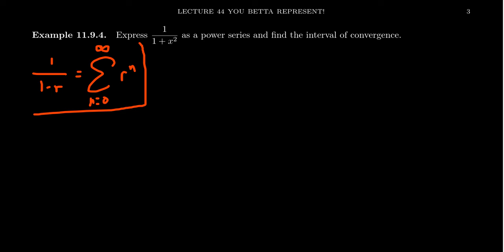Comparing this original rational function with our target rational function, we see that we want to take this positive x squared and set that equal to negative r. That is, x squared equals negative r because we have a positive here and a minus there. In other words, r equals negative x squared, and we make that substitution.